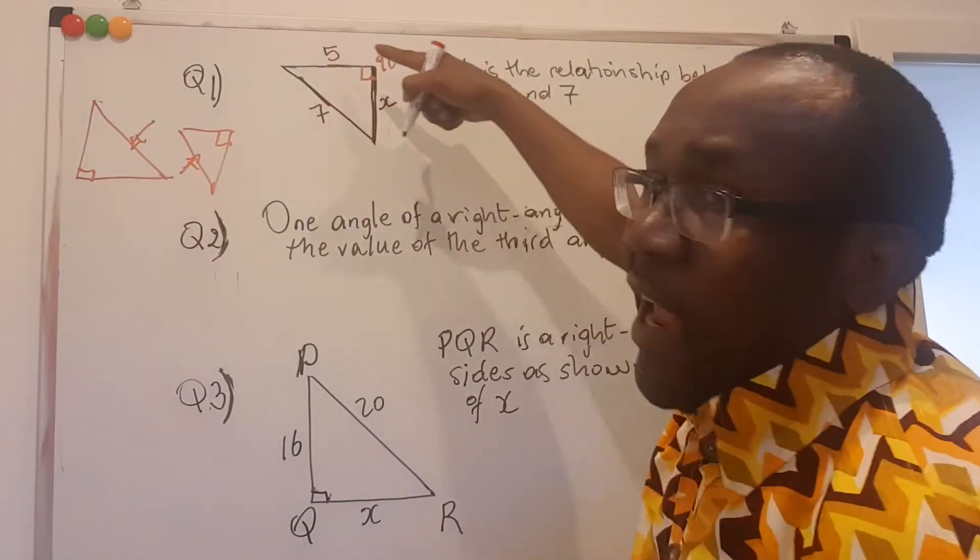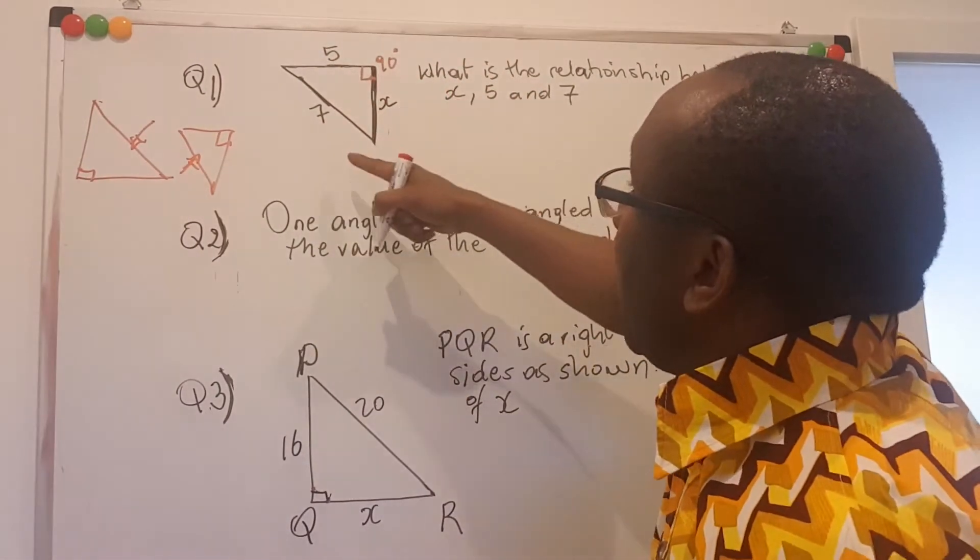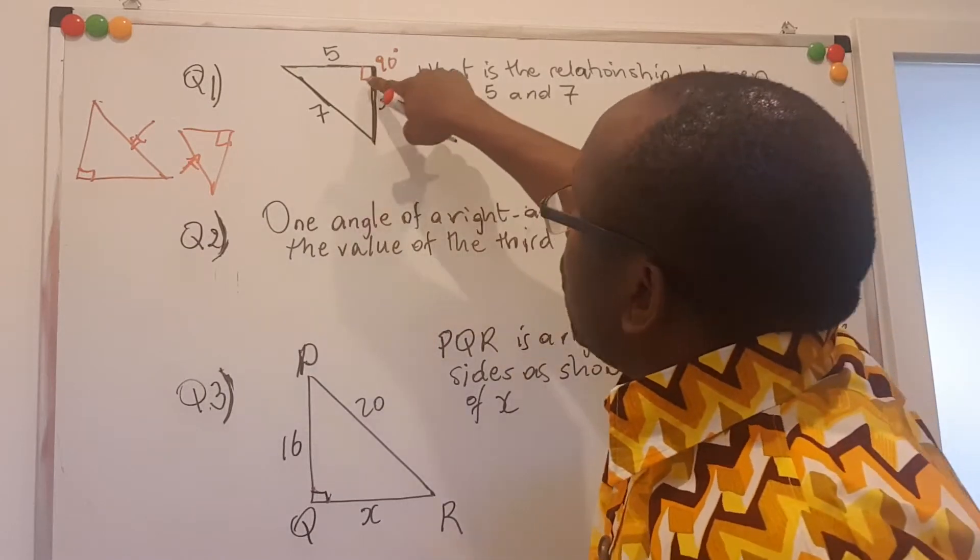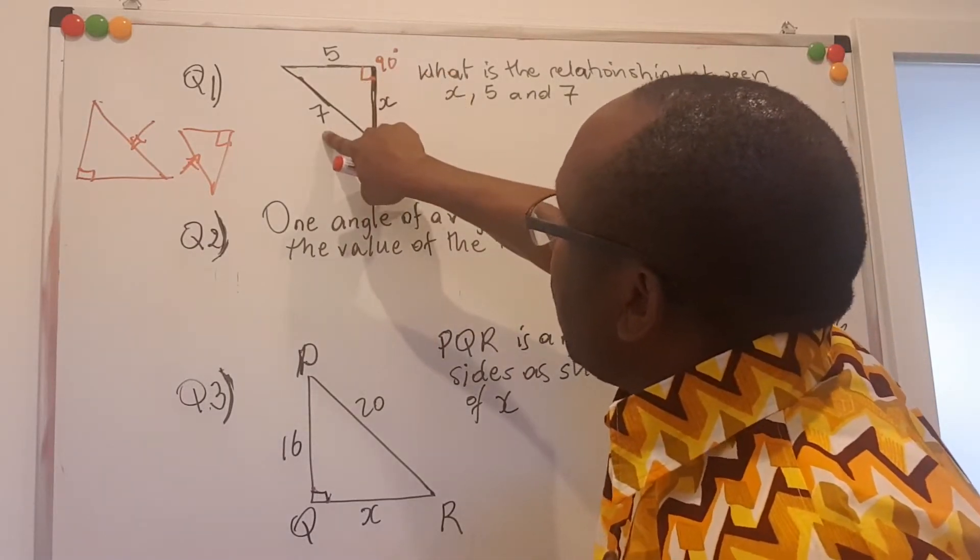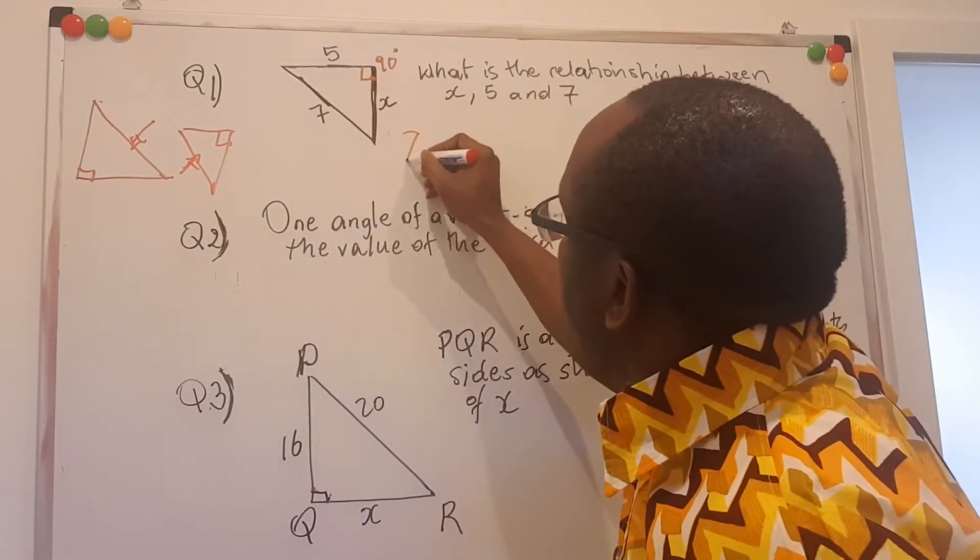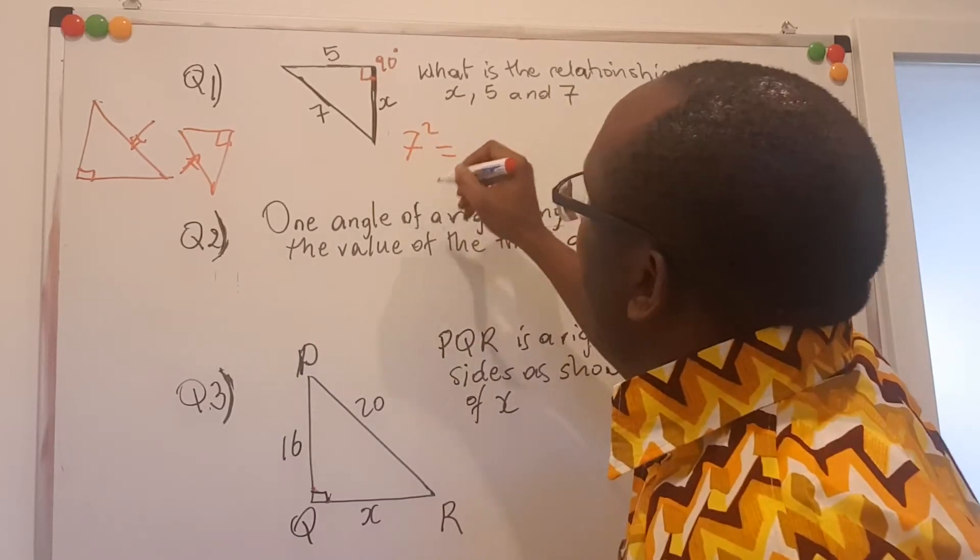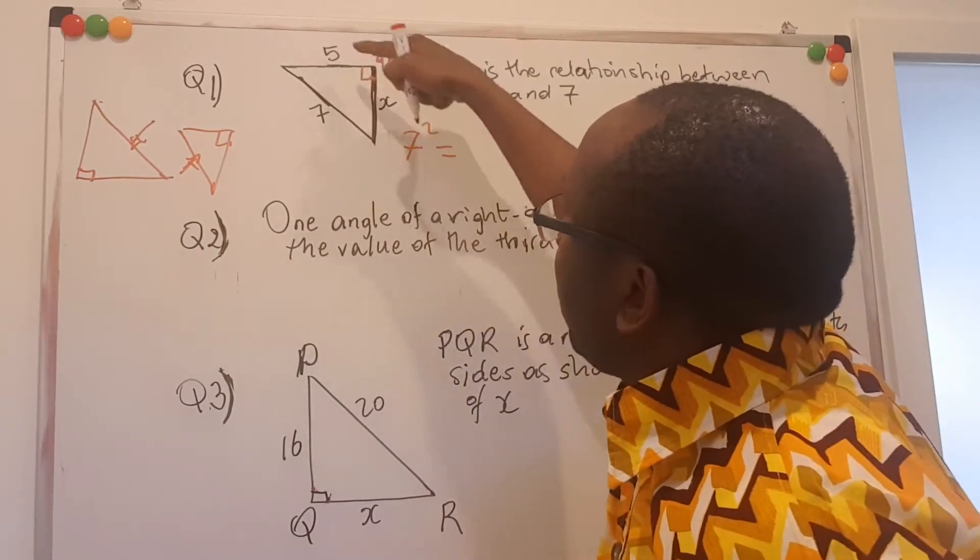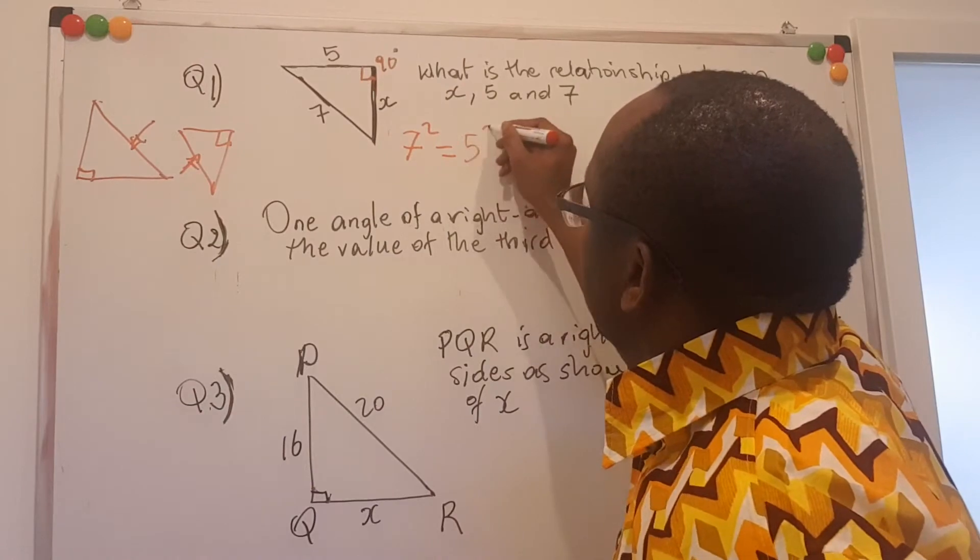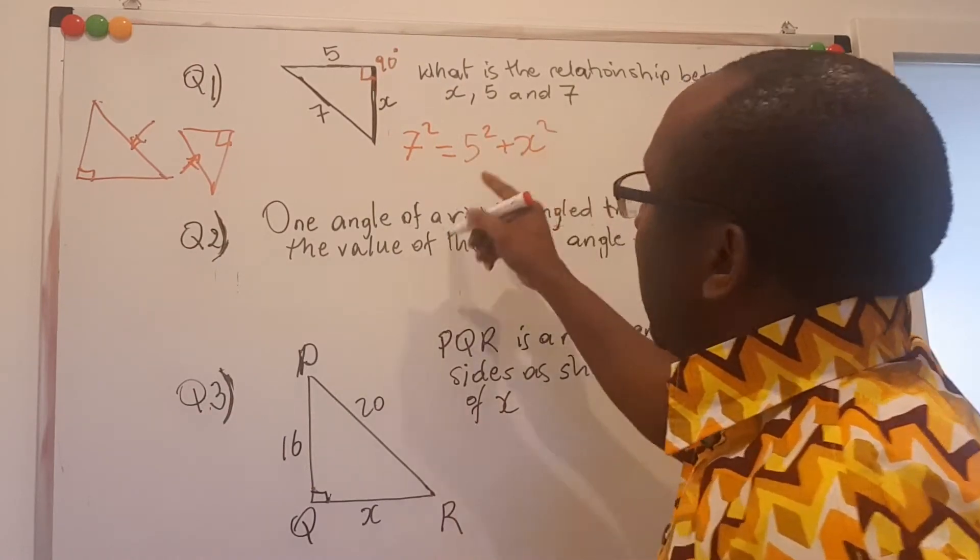So according to the Pythagoras theorem, the square of the side opposite the right angle, or what we call the hypotenuse, that is 7 squared, is equal to the sum of the squares of the other two sides: 5 squared plus x squared. That's the relationship.